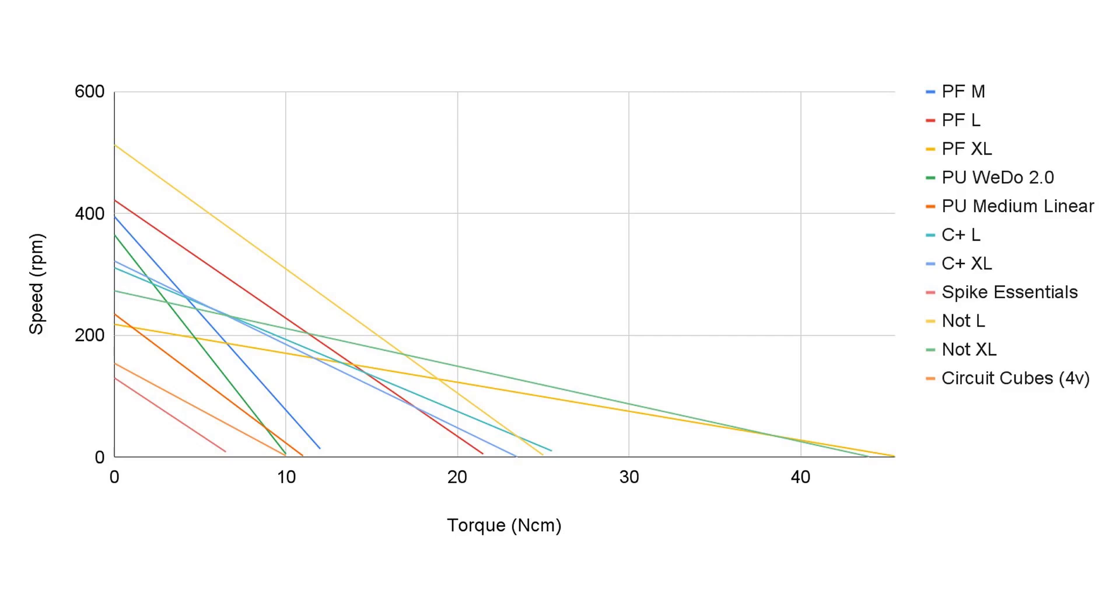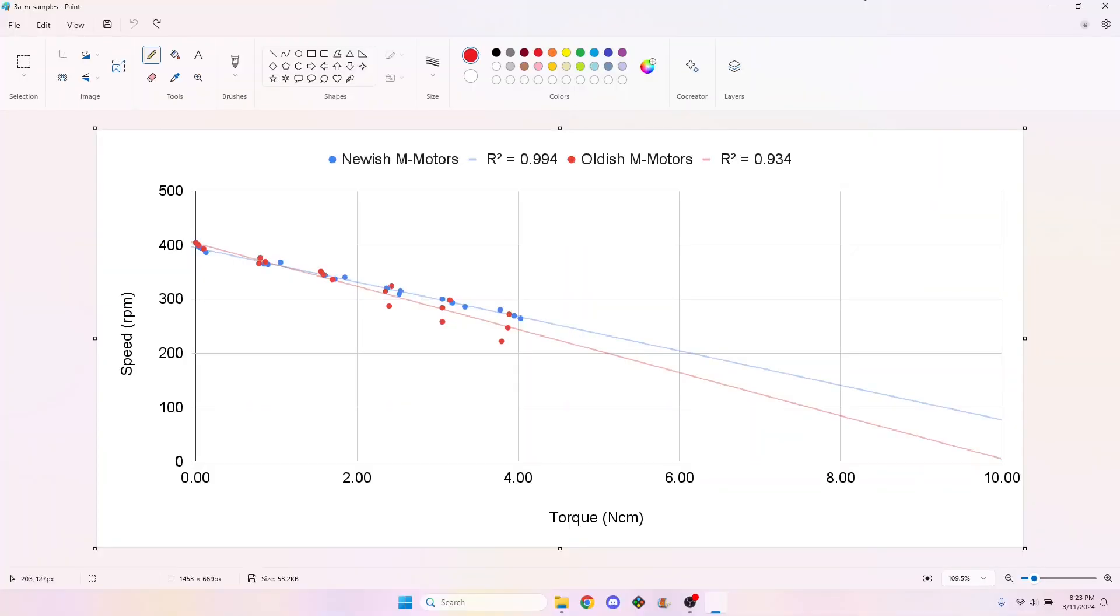The graphs we made before most likely overstate motor performance toward the stalled torque, because we only sampled a small amount of the range and extrapolated the rest.